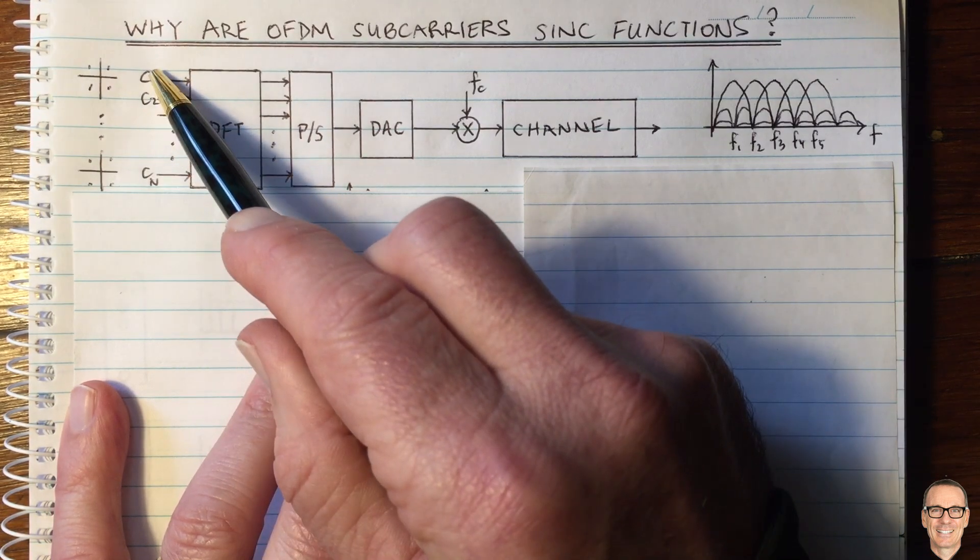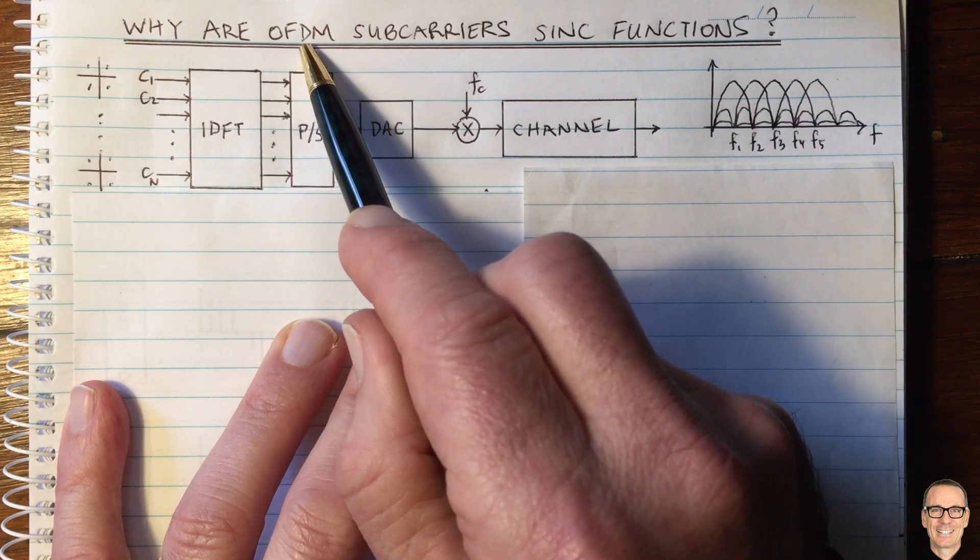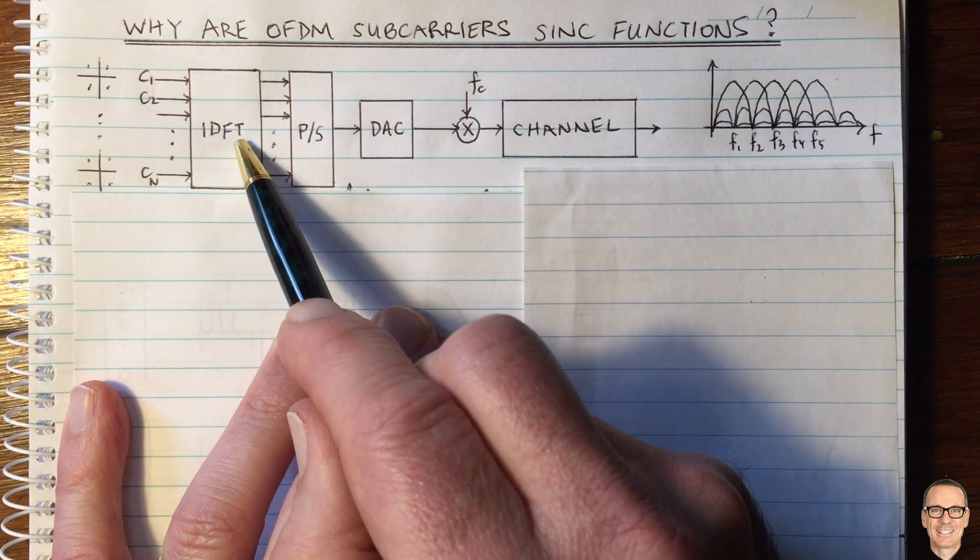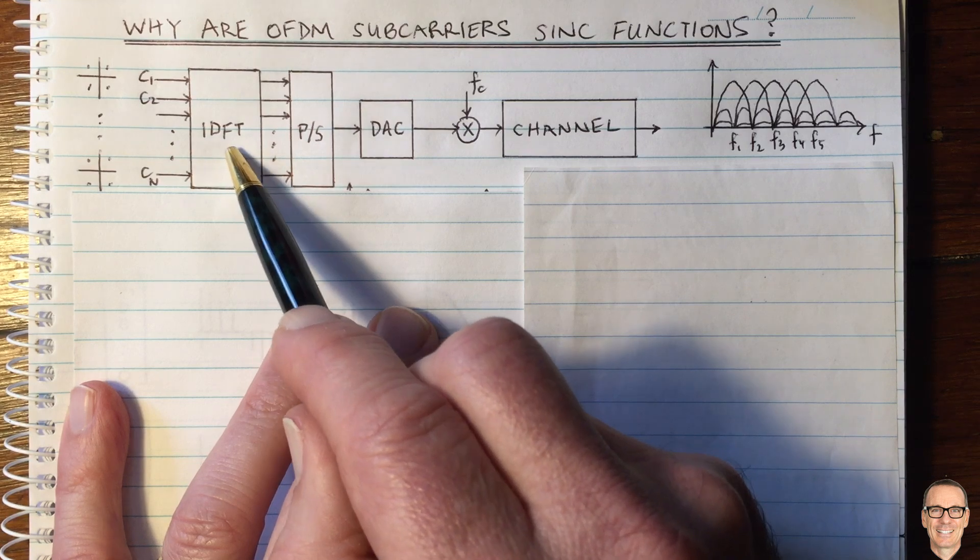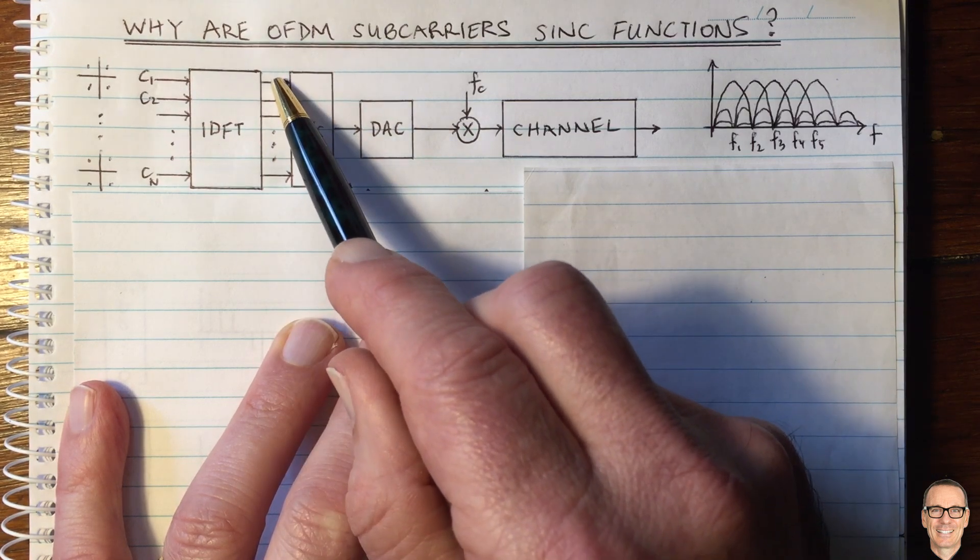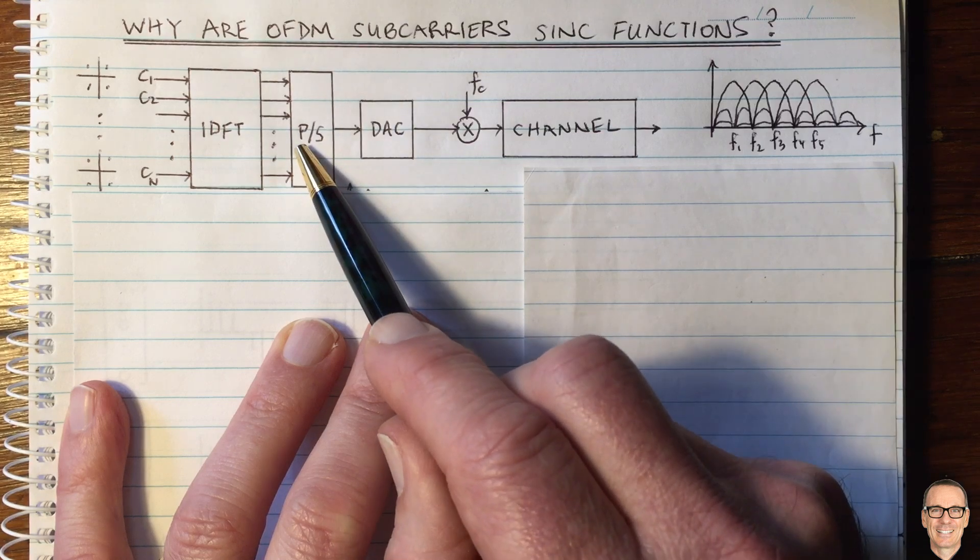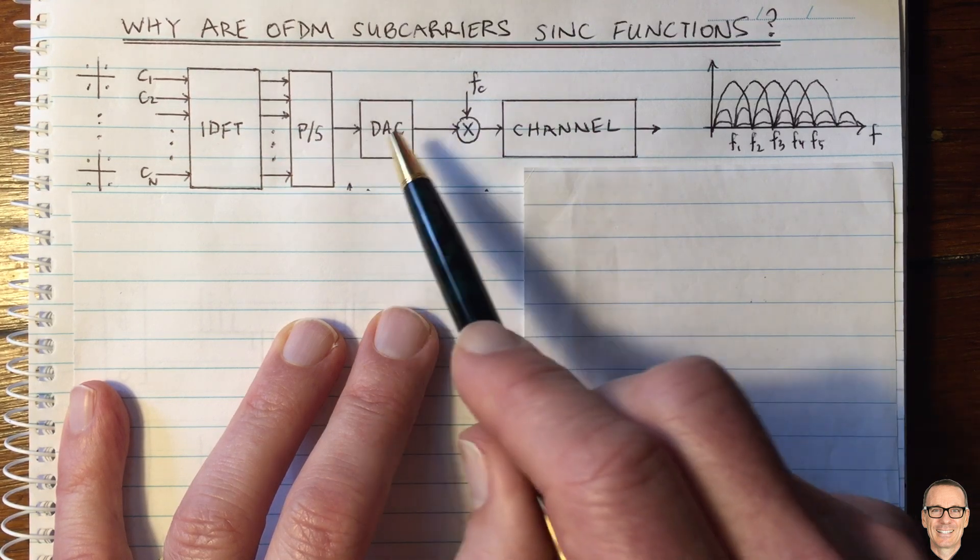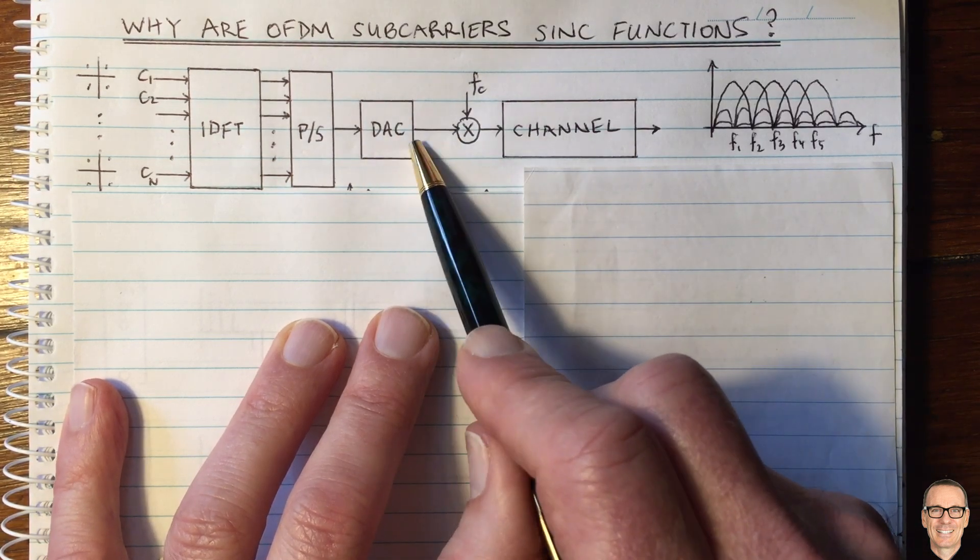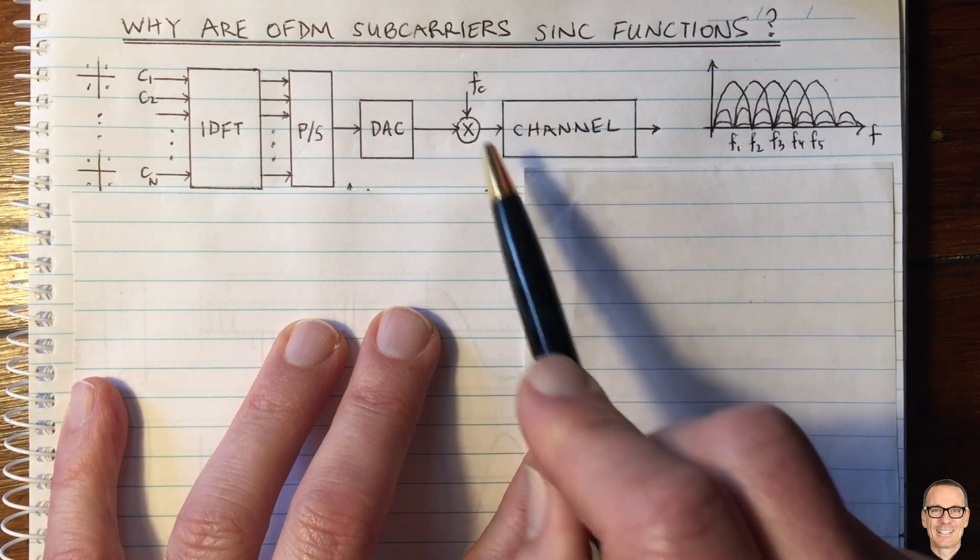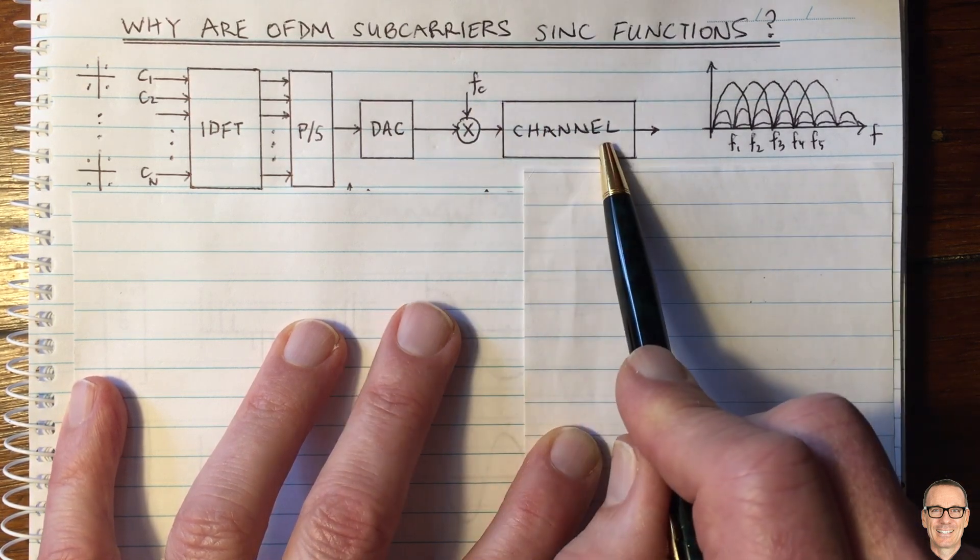So these complex numbers in OFDM are converted through an inverse discrete Fourier transform, or inverse FFT, and that produces a vector of the same length, of length n, that is then converted from parallel to serial and converted through a digital to analog converter into a waveform, which is then upconverted to the carrier frequency and transmitted over the channel.